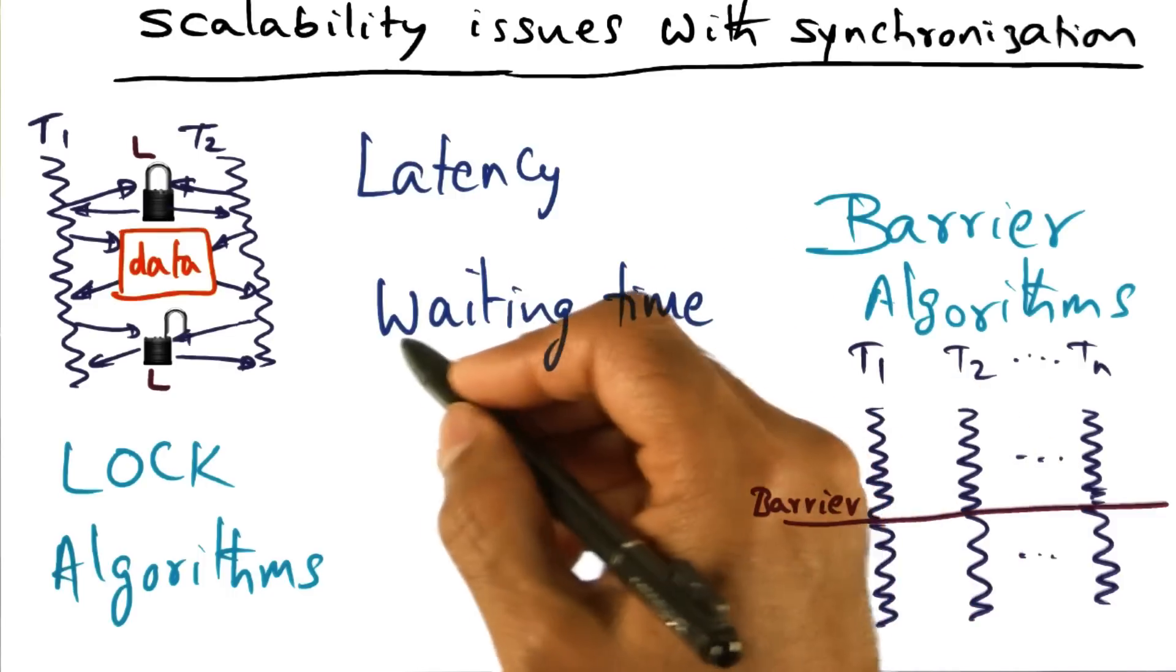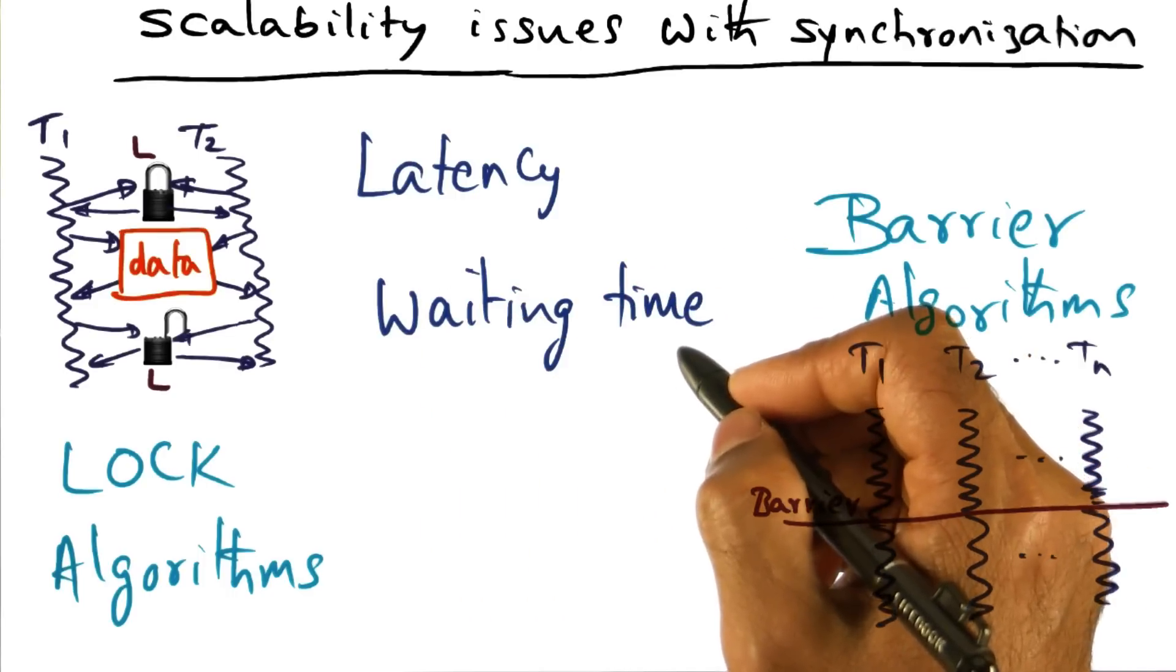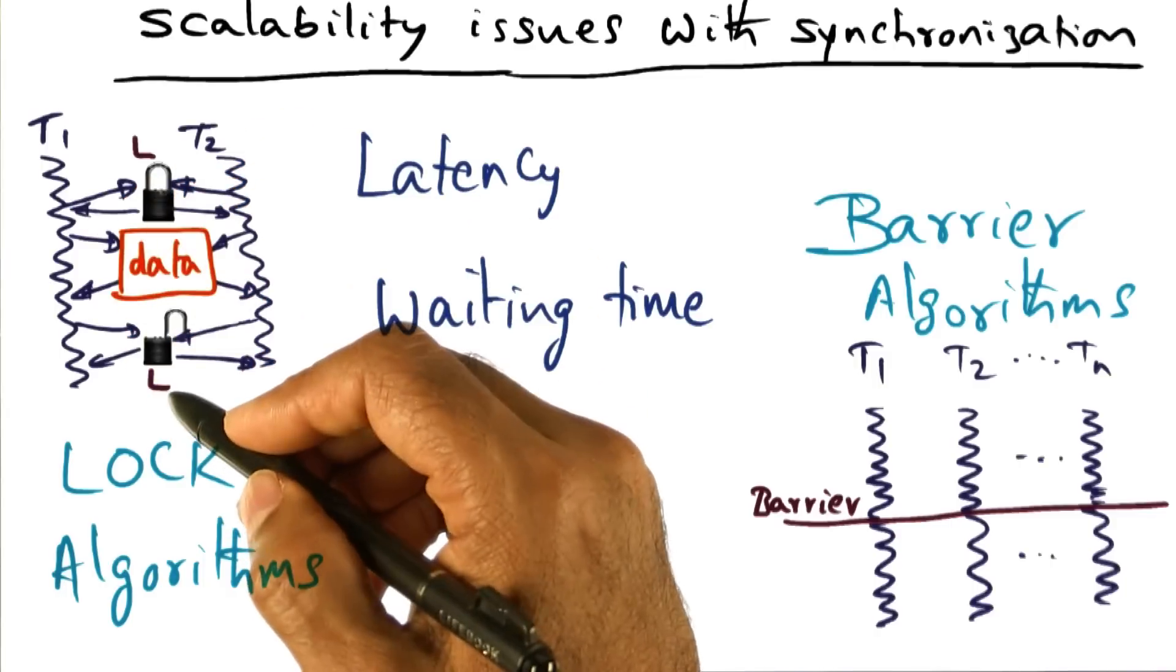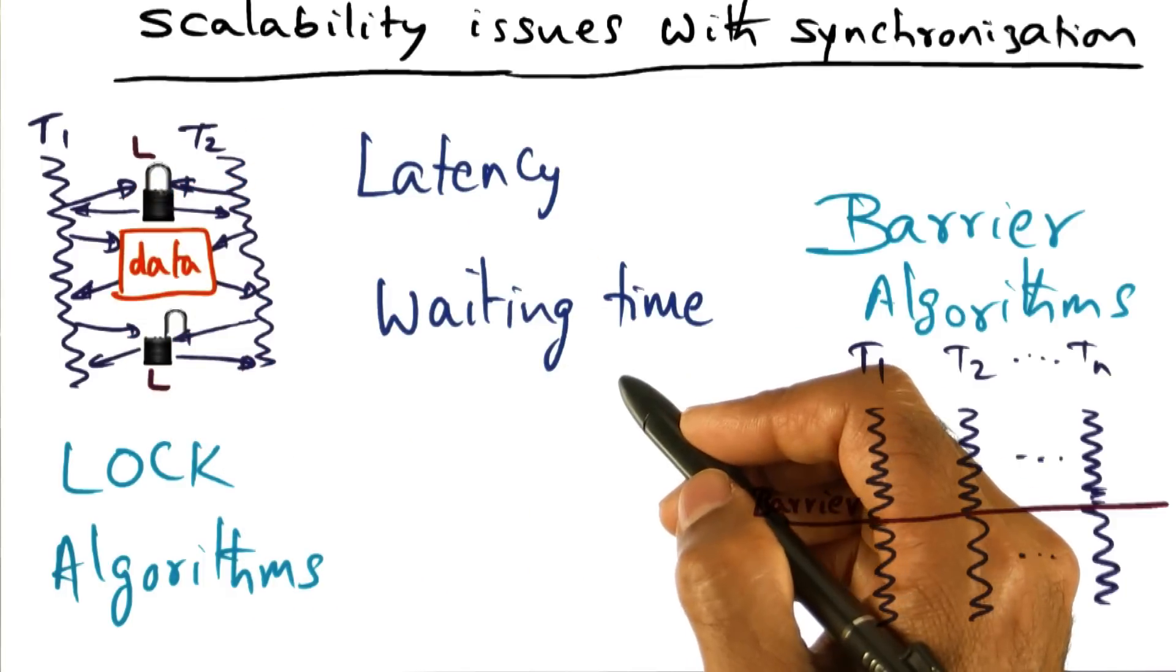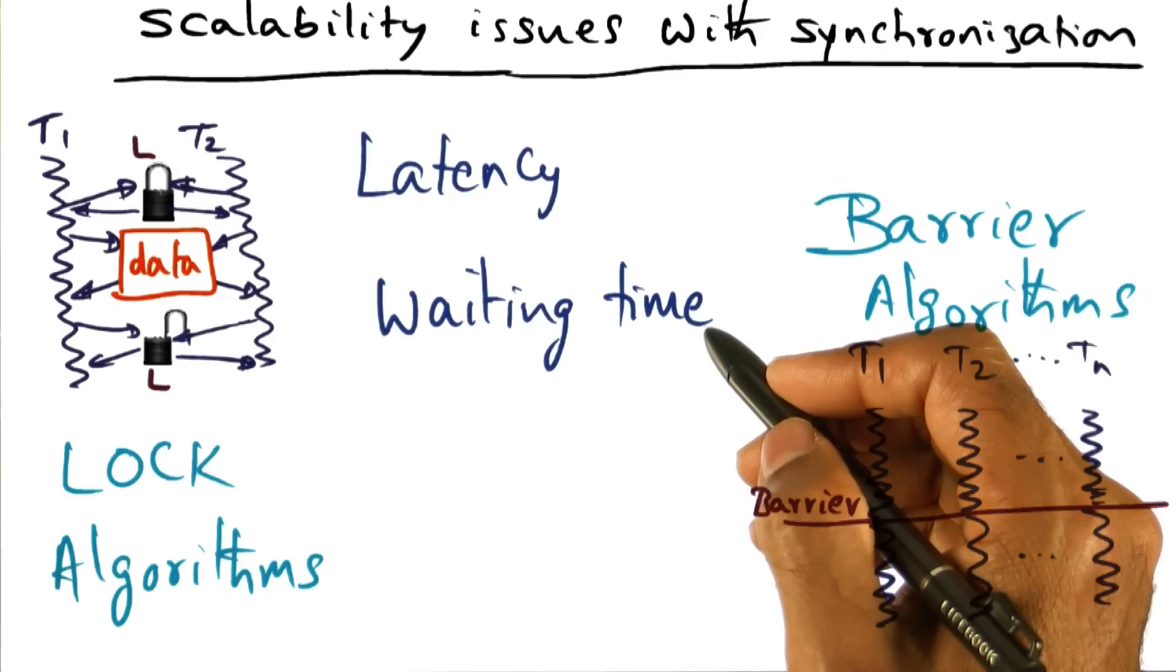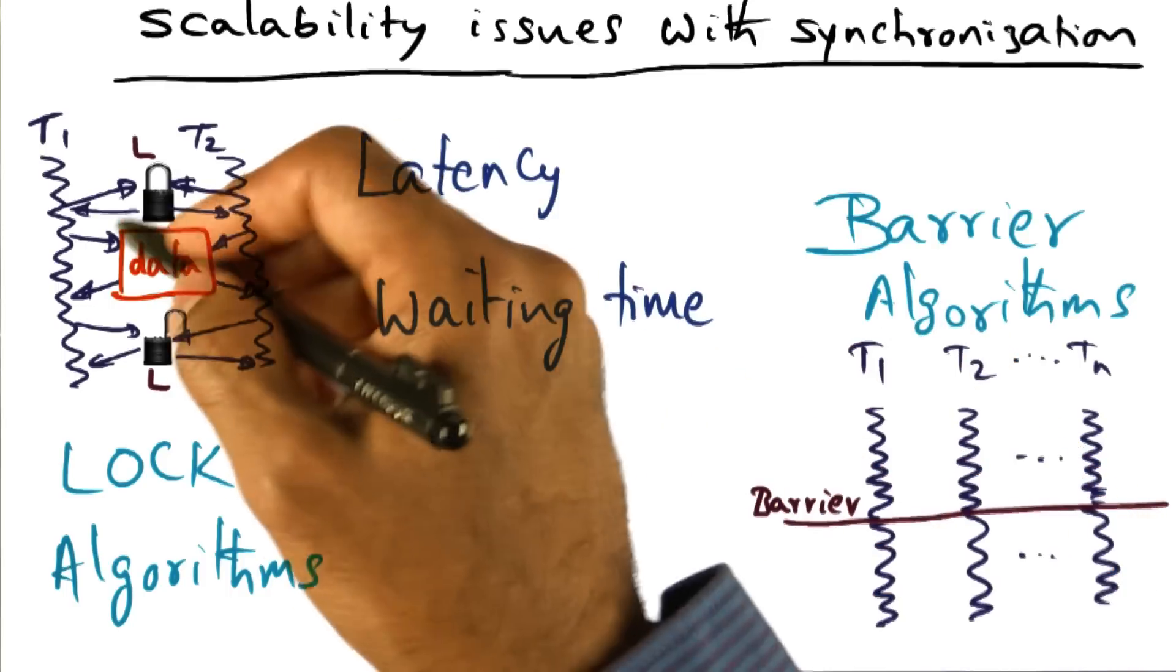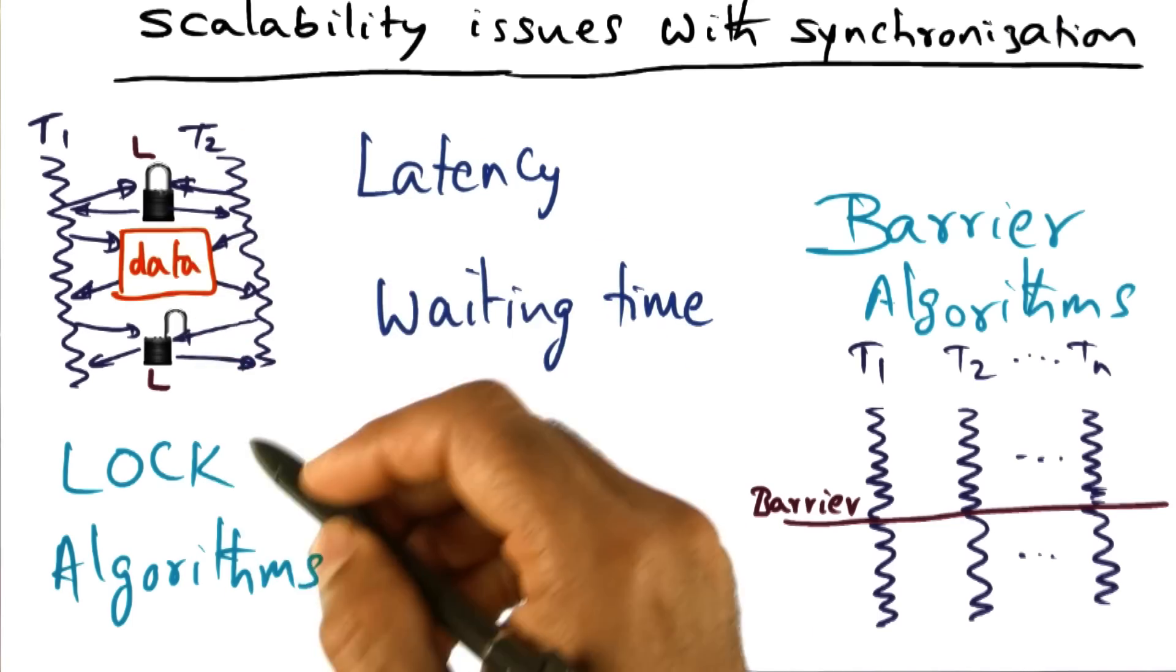The second source of scalability issues with synchronization is the waiting time. If I want to go and get the lock, how long do I wait in order to get that lock? Clearly, this is not something that we as the OS designer have complete control over, because it really depends on what these threads are doing with this lock.